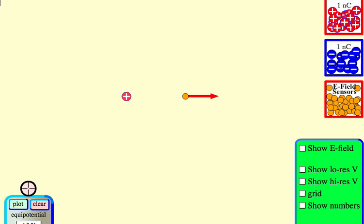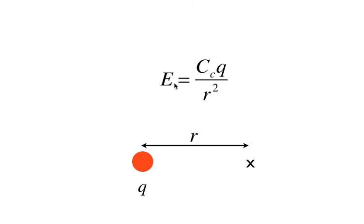The formula to figure out electric field is much like the formula for force except it involves just one charge. So if I want to know the electric field where this x is we do Coulomb's constant times the charge divided by the distance squared.